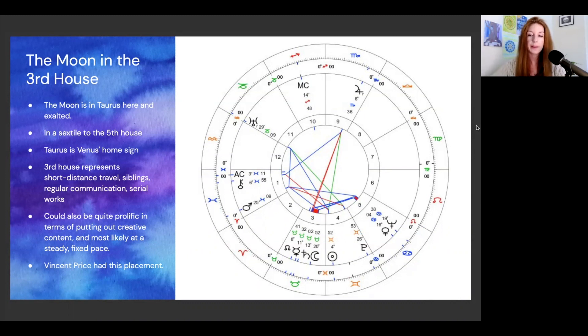Vincent Price had this placement, and that's whose chart we're looking at. He was an American actor best known for his performances in horror films, although his career spanned other genres too, including film noir, drama, mystery, thriller, and comedy. He appeared on stage, television, and radio, and in more than 100 films. That is the prolific quality of the moon in Taurus in the third house. He worked from his 20s until he died in the 80s.